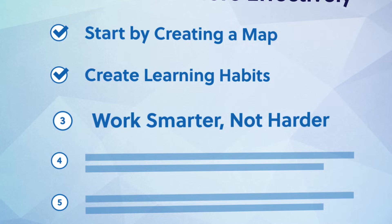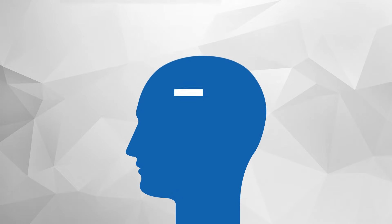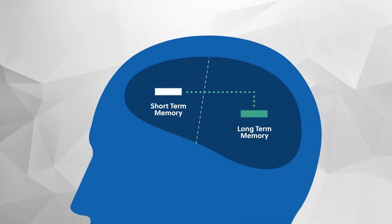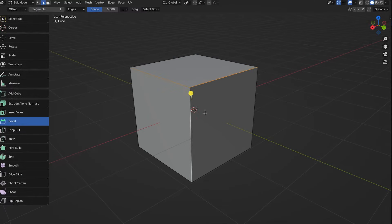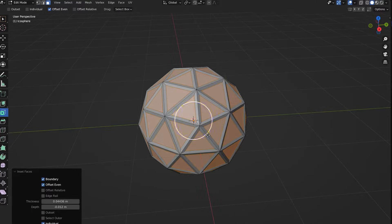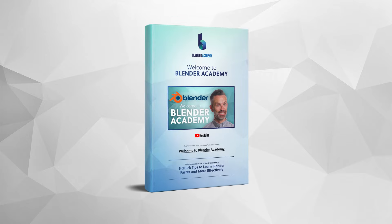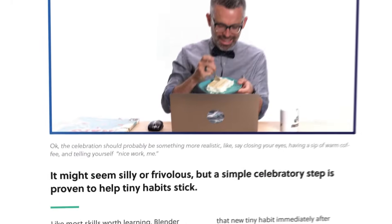That leads me to tip number three: work smarter, not harder. If you're like most of my students, you may fall into the trap of spending hours cramming your brain full of Blender. But research shows that learning doesn't work this way. Instead, we really need to take in the smallest amount of new information possible and then immediately try to put that into practice without referring back to the source. By practicing retrieving or remembering these small bits of information that are already leaking out of our short-term memory, we actually begin building them into our long-term memory. I've created a free set of notes with an easy-to-follow method for breaking up your Blender learning sessions to maximize efficiency and memory retention — there's a link to download them in the description.